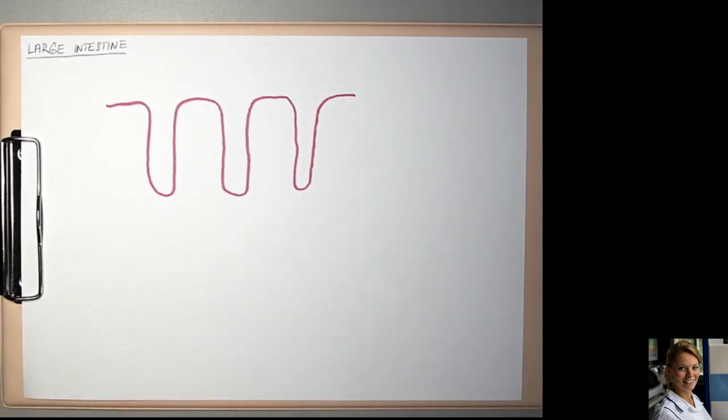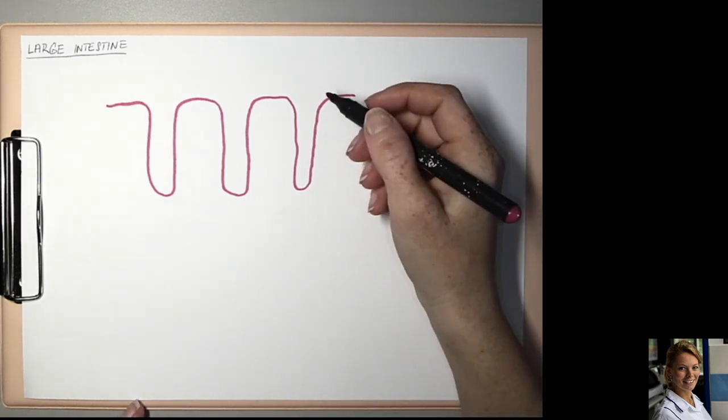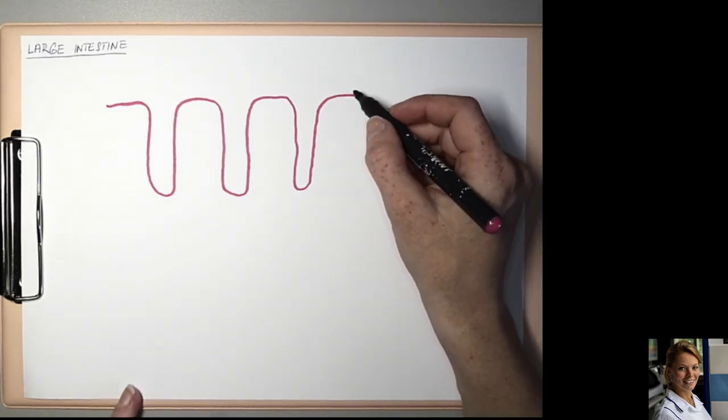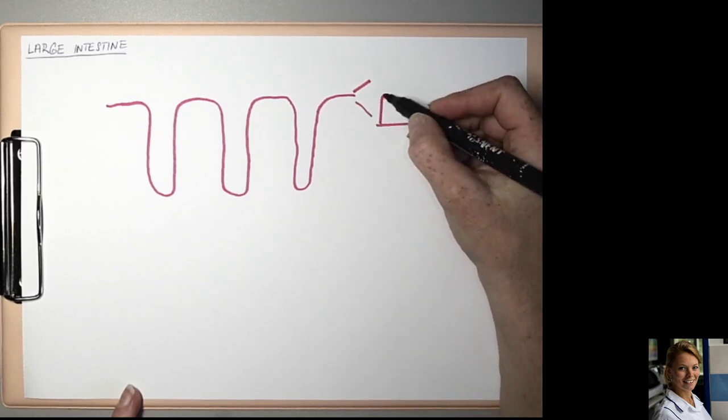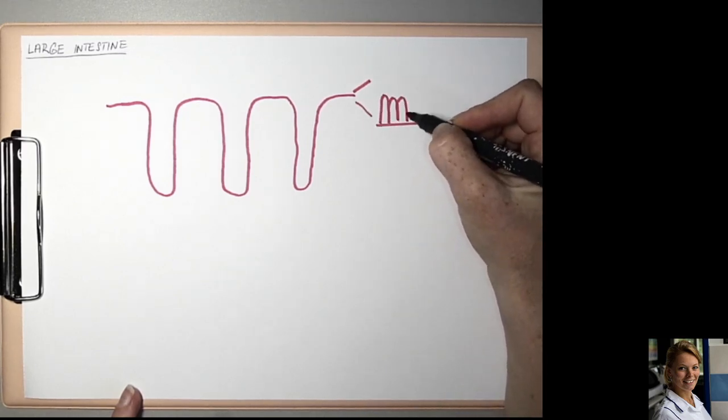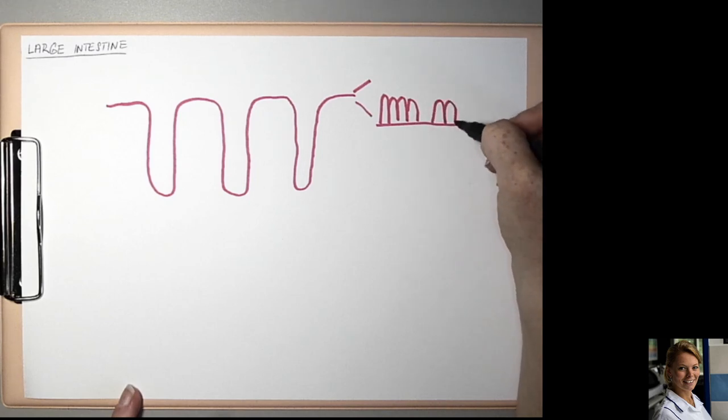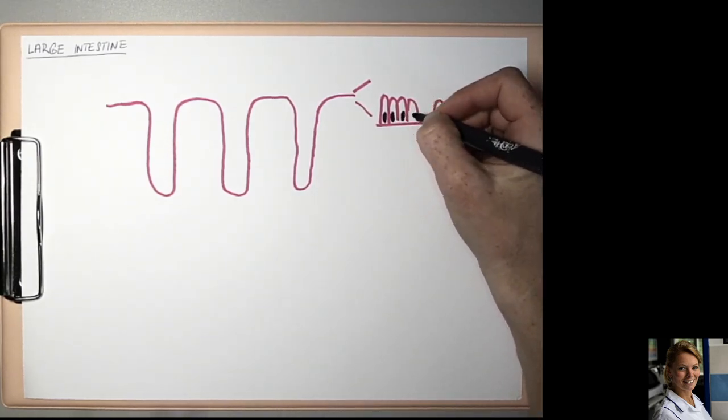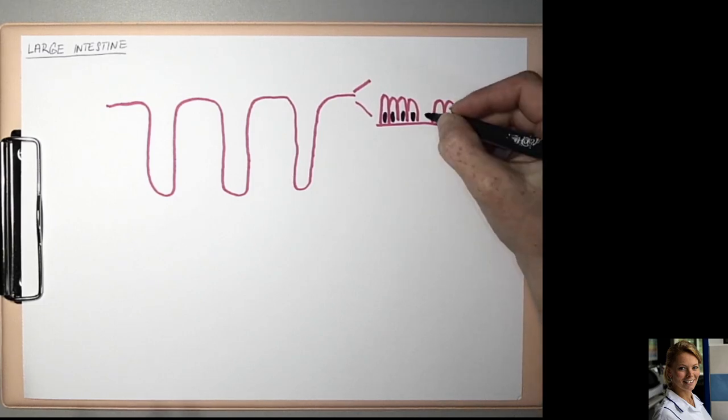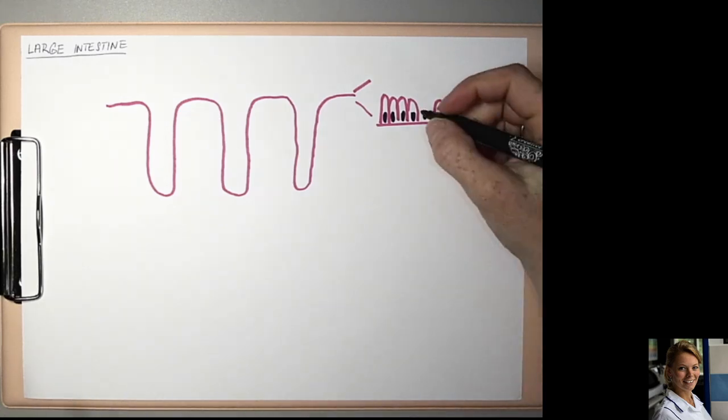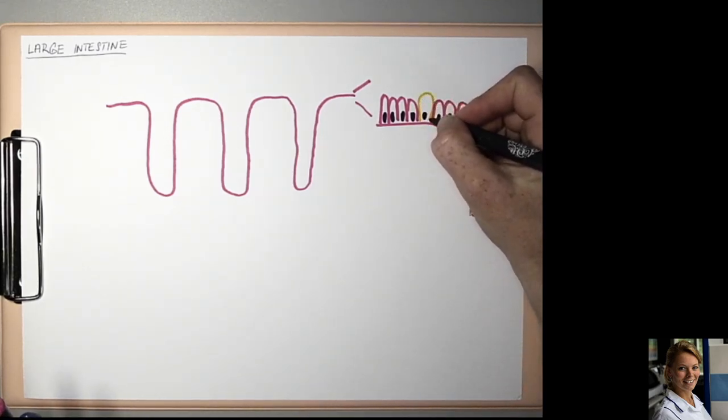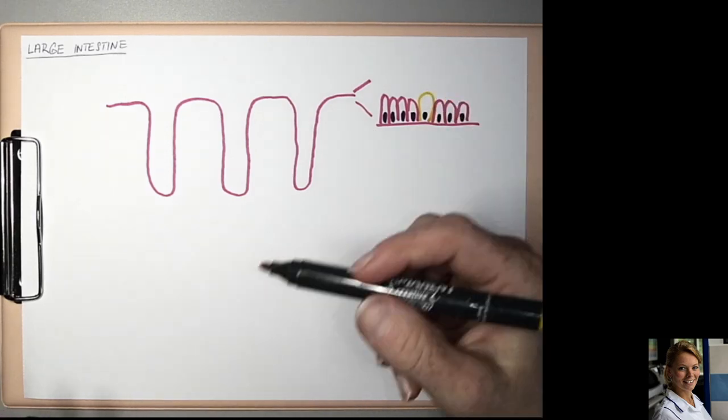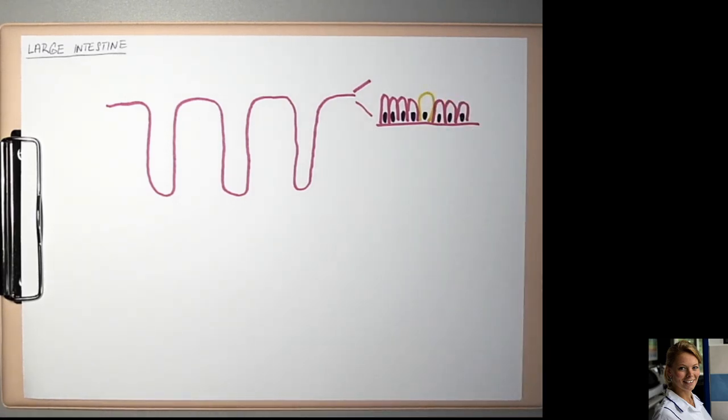The entire surface of the lumen and the intestinal crypts are lined by simple columnar epithelium with goblet cells. Both of them have basal located nuclei, but goblet cells have very pale cytoplasm due to mucous vacuoles in their cytoplasm.